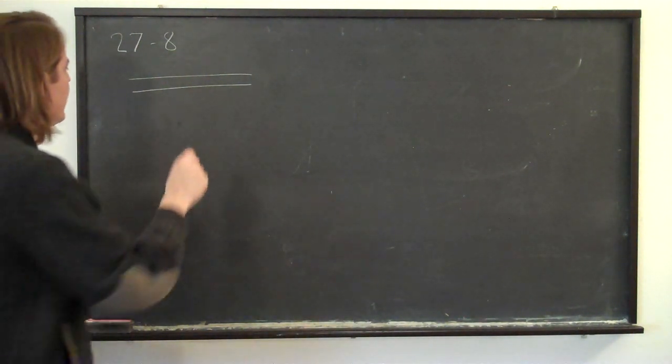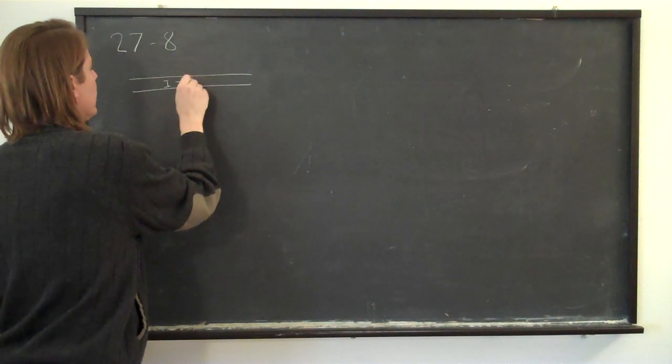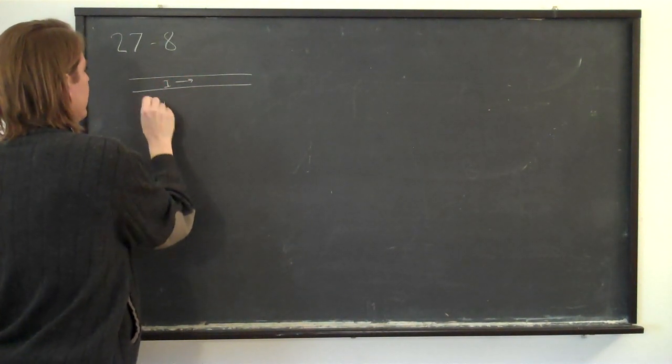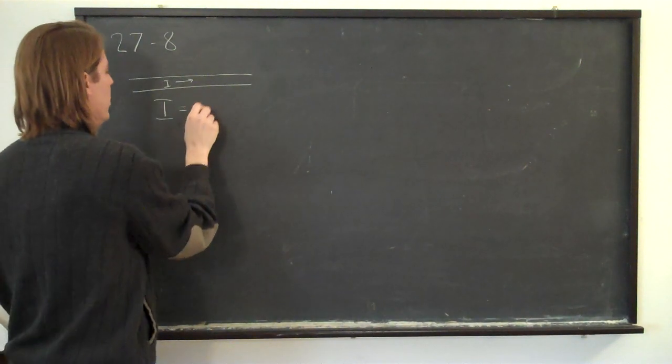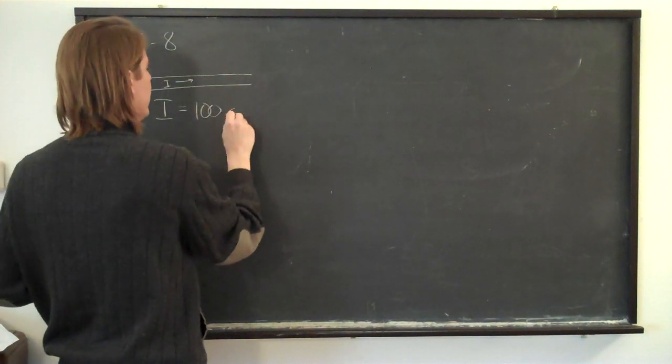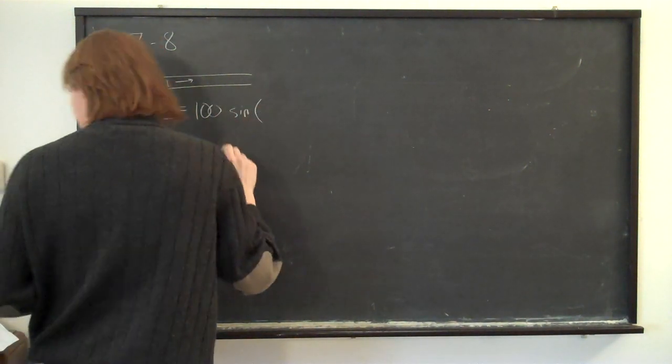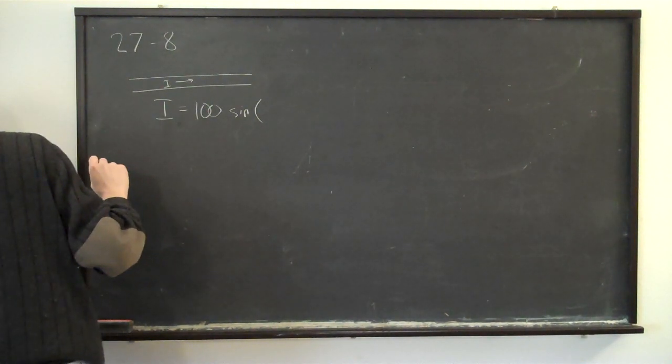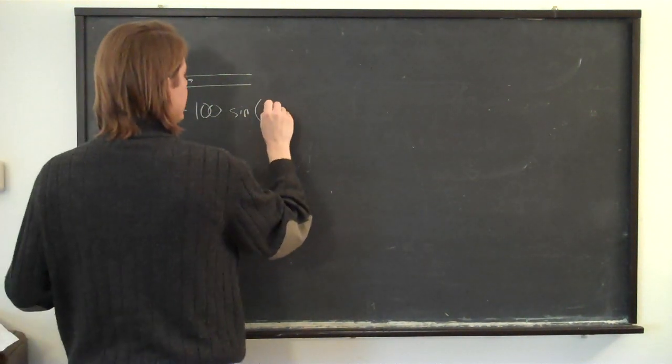It gives us an expression to describe the current in this wire that's actually going back and forth. The current as a function of time is 100, amplitude 100, sine of 120 pi T.